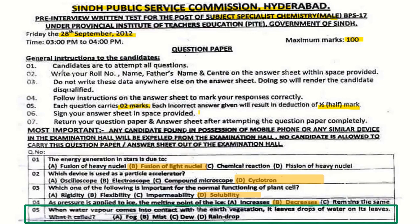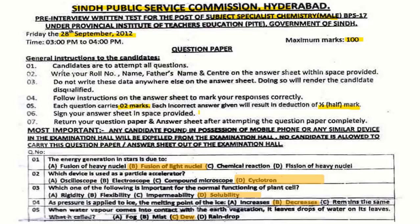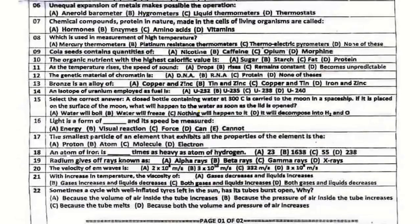Question number 5: When water vapors come into contact with the earth's vegetation, it leaves drops of water on its leaves. What is this called? The correct answer is dew.